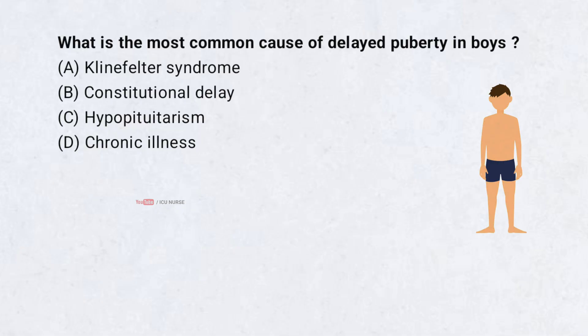What is the most common cause of delayed puberty in boys? A. Klinefelter syndrome. B. Constitutional delay. C. Hypopituitarism. D. Chronic illness. Correct answer: B. Constitutional delay.